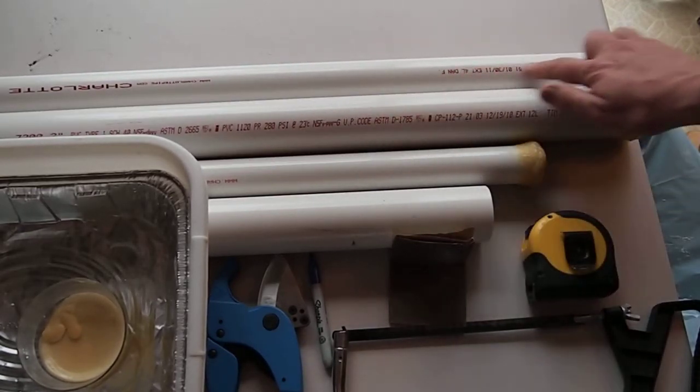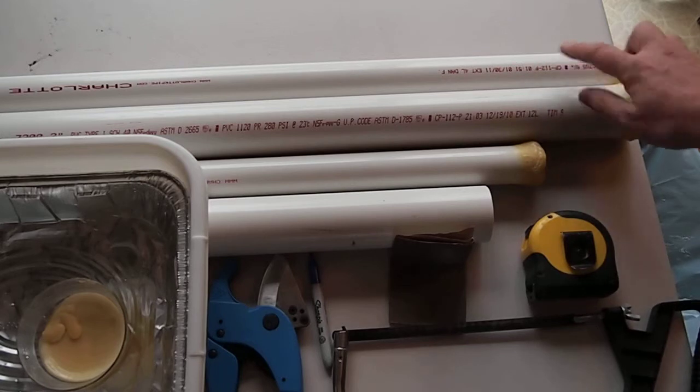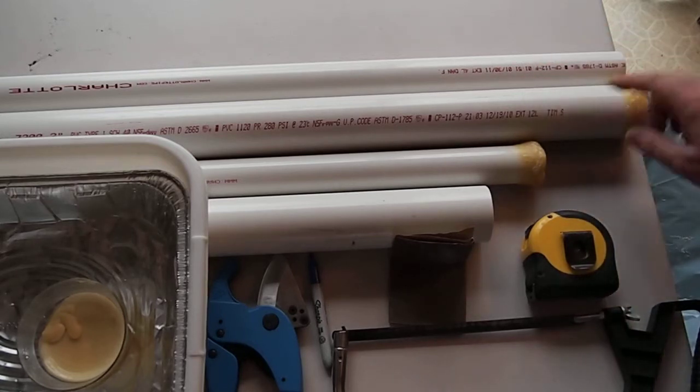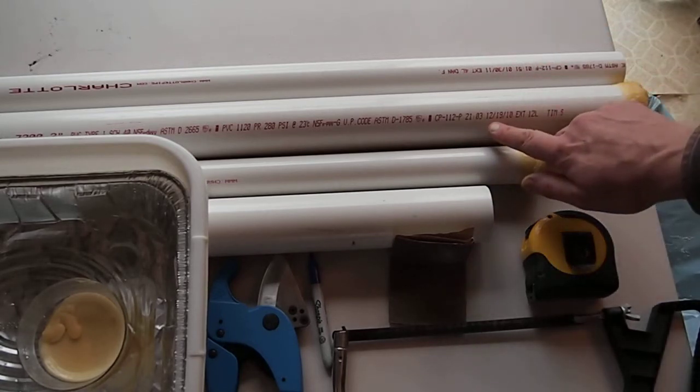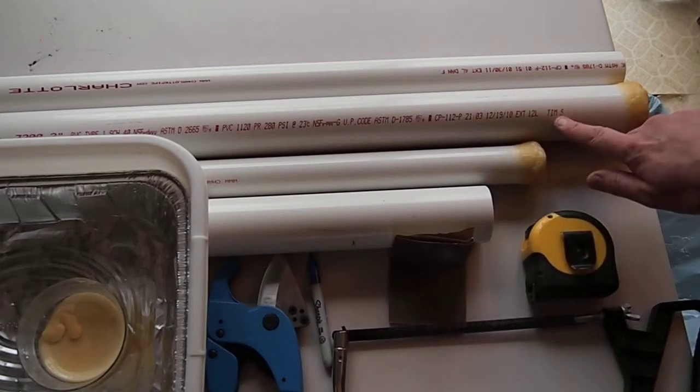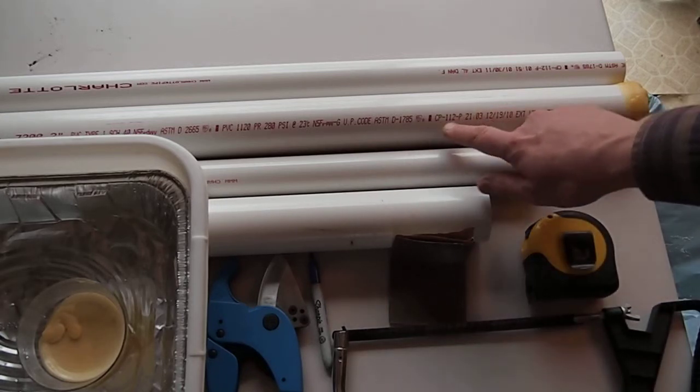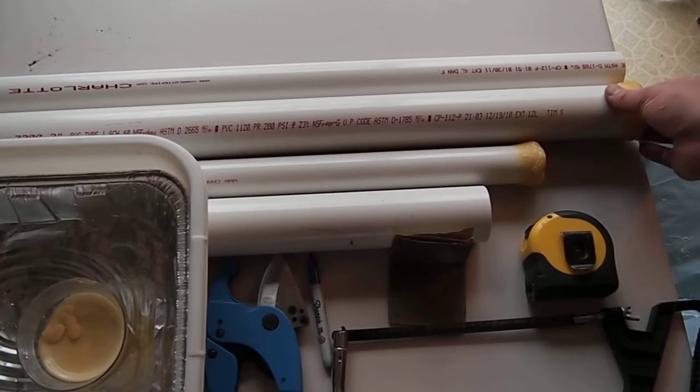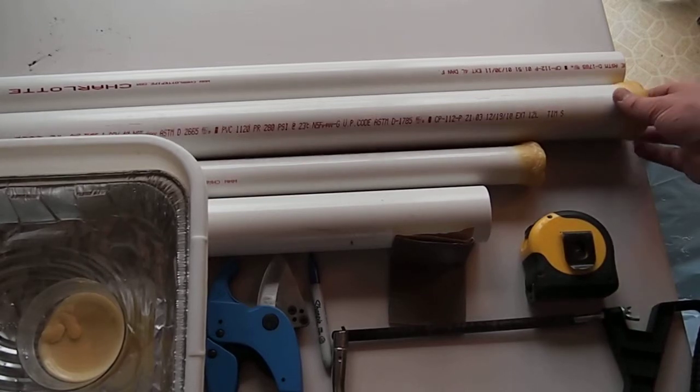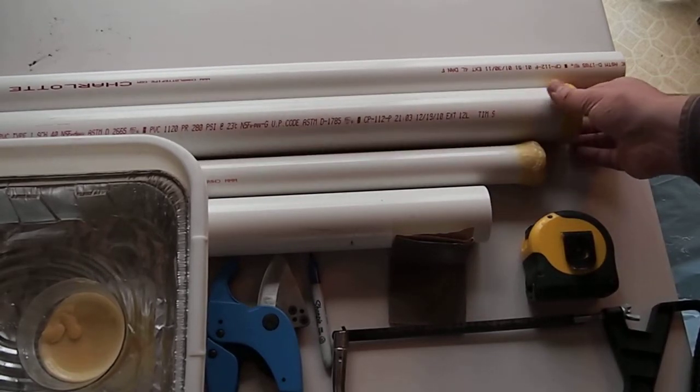And it says in this red lettering here what the size pipe it is. It's also kind of interesting, you can see the date on which it was made and the person who was on the line when it was being made. And it has some other information about the batch and the company and how to get in touch with the company. So this is just regular hardware store PVC.